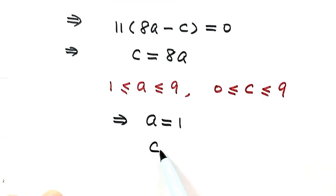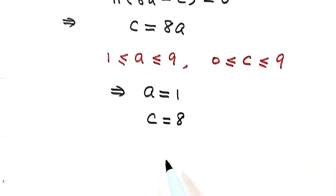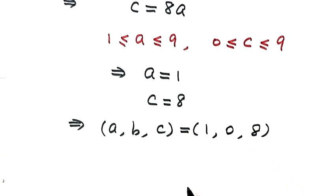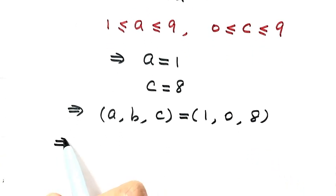So then C equals 8. We have the three digits: A is 1, B is 0, and C is 8. So the three-digit number ABC = 108. 108 is the three-digit number we are looking for.